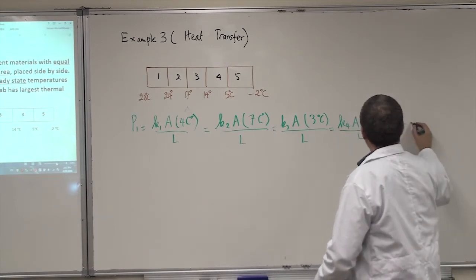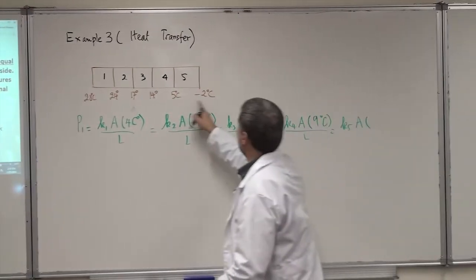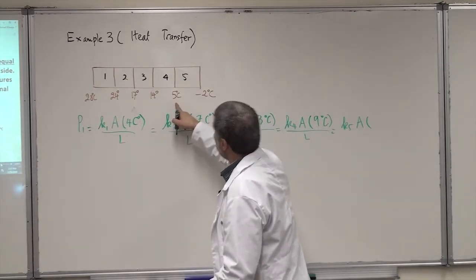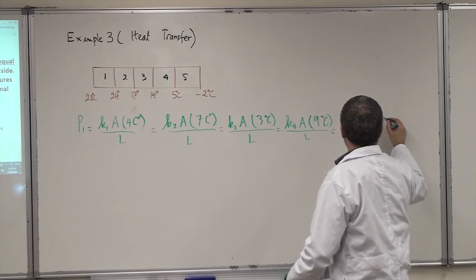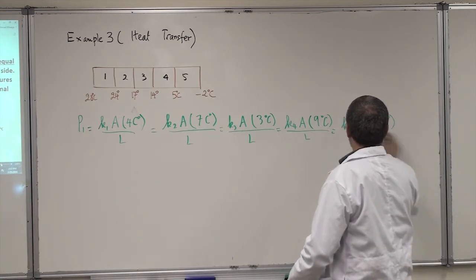Equal K5, A, delta T here, will be 5 minus minus 2, that's 7. C degree. K over L.